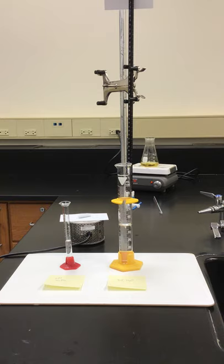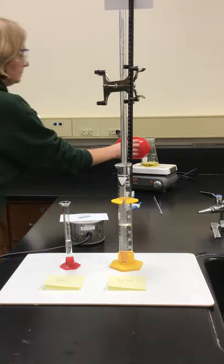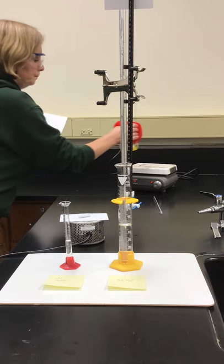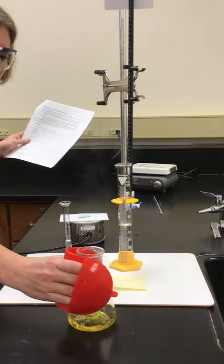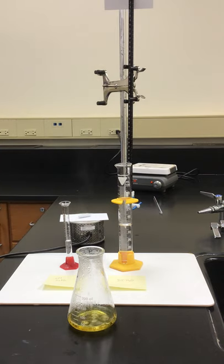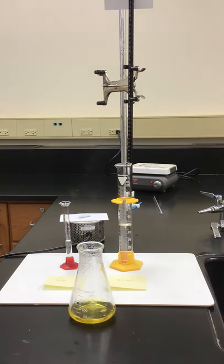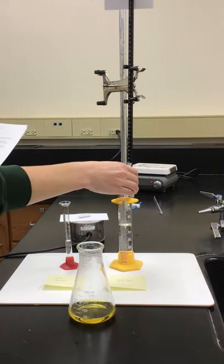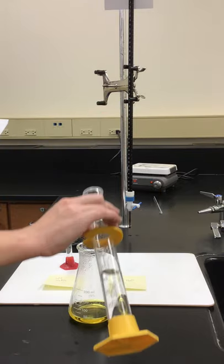We're going to then react that iron two ion with our standardized potassium permanganate. I'm going to take this off of the heat, set it here. Our directions say to take the product of the hydroxylamine and iron three reaction and add 50 milliliters worth of DI water. So that's what I have here.